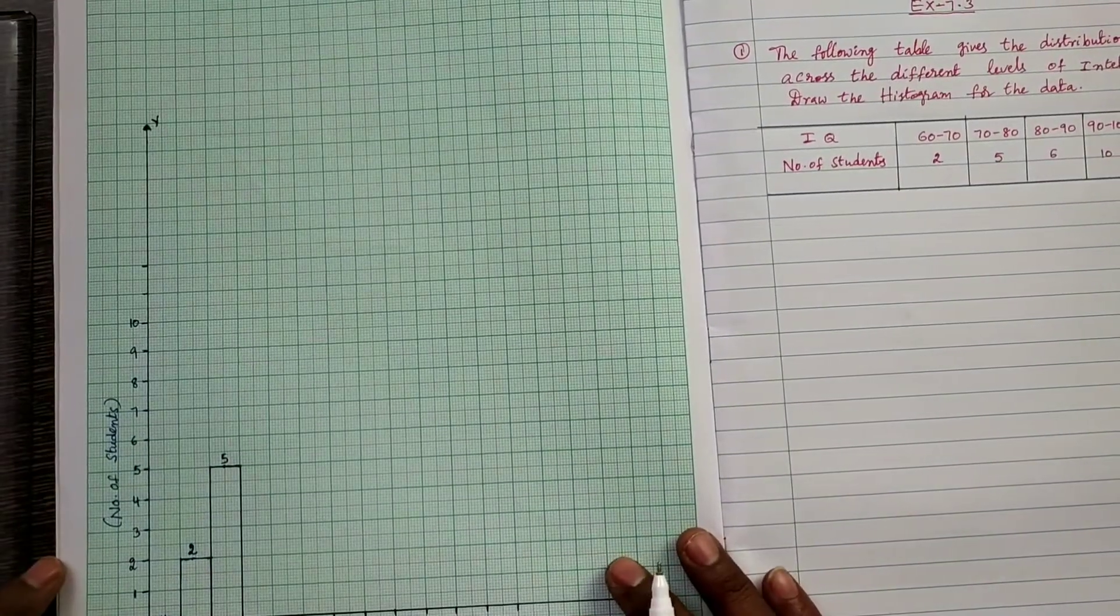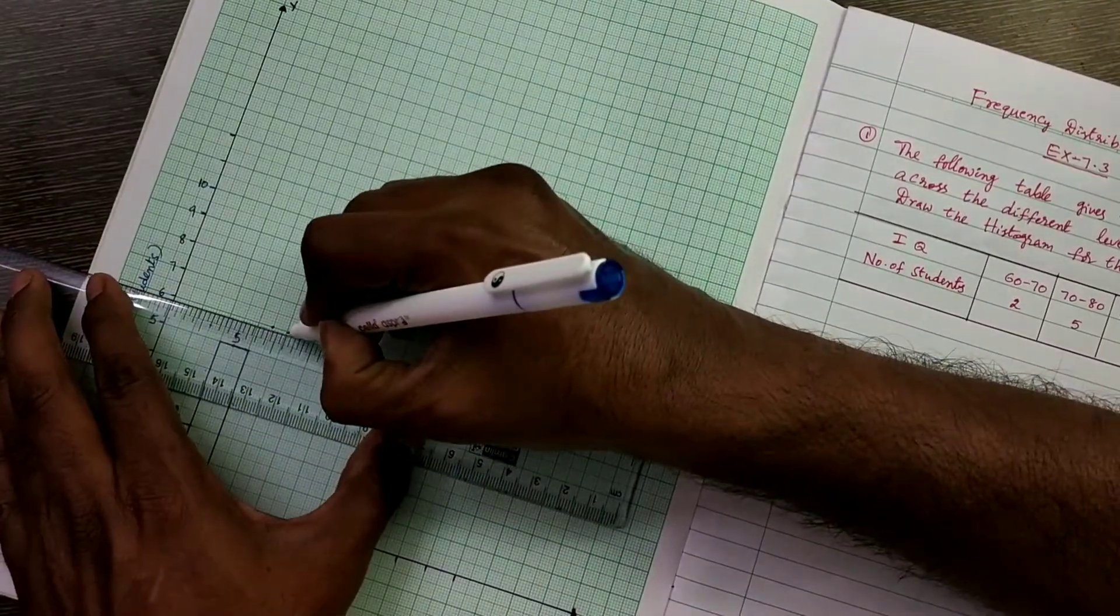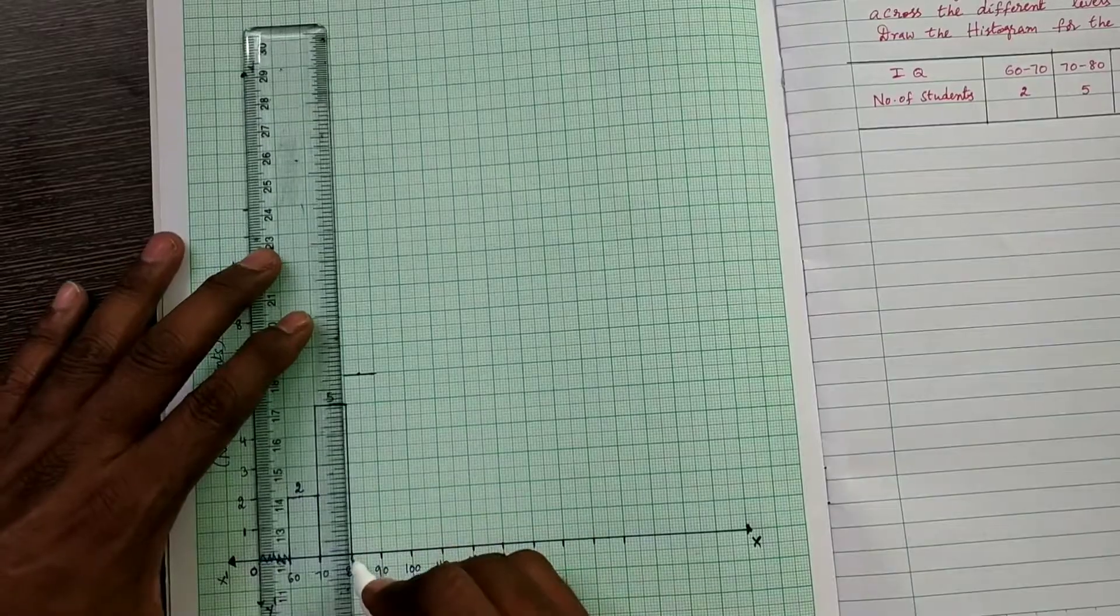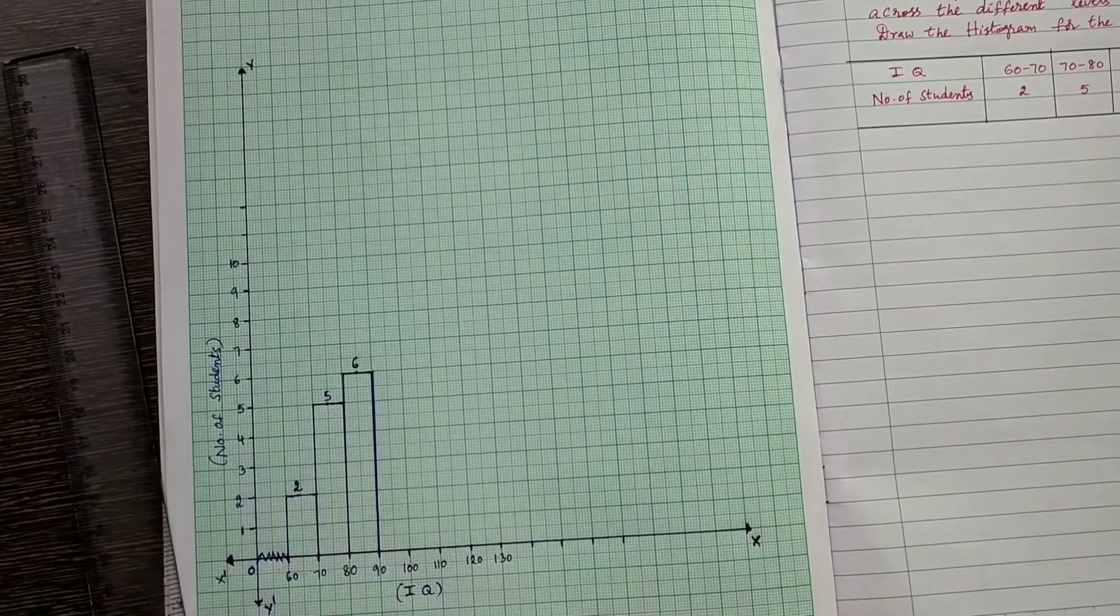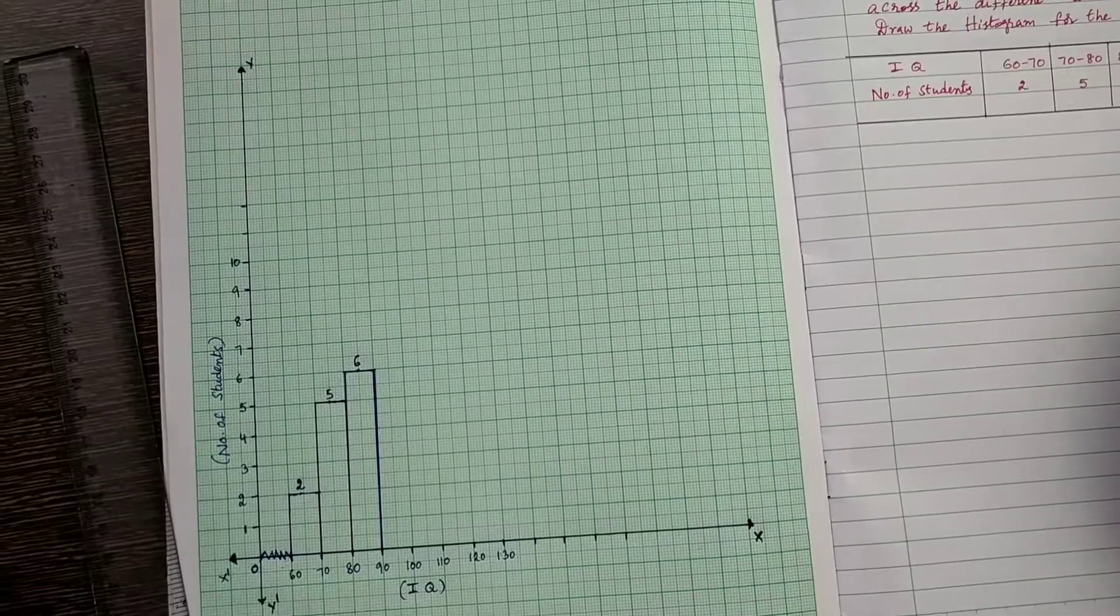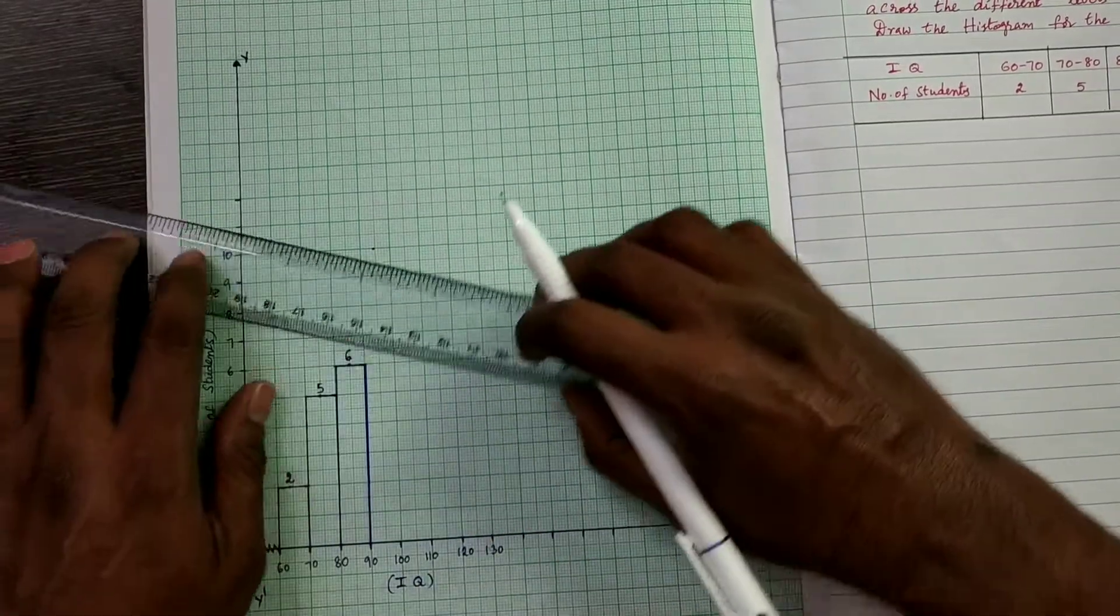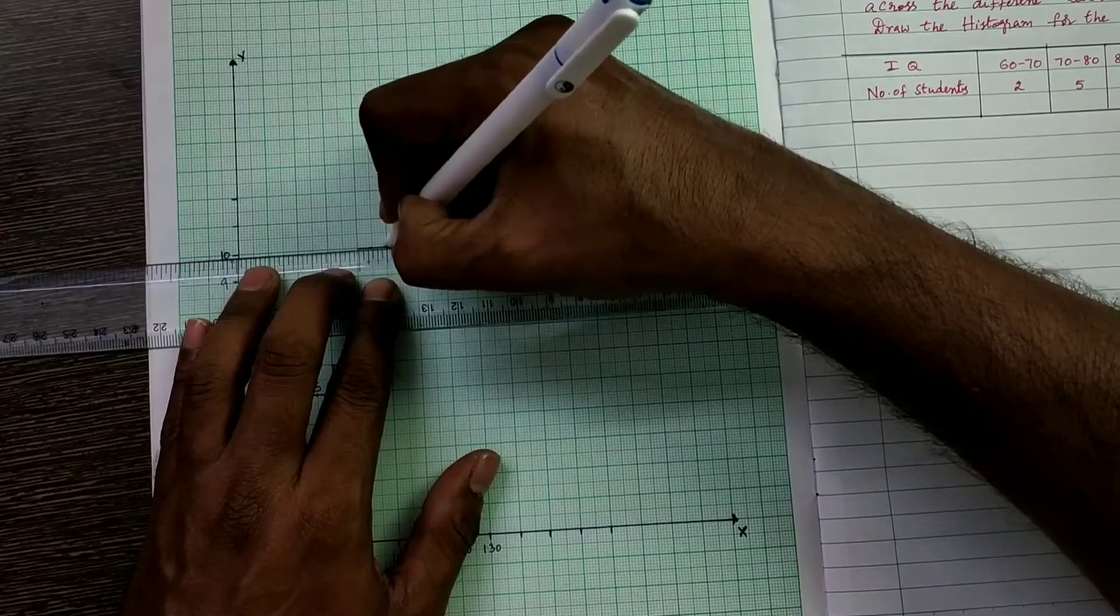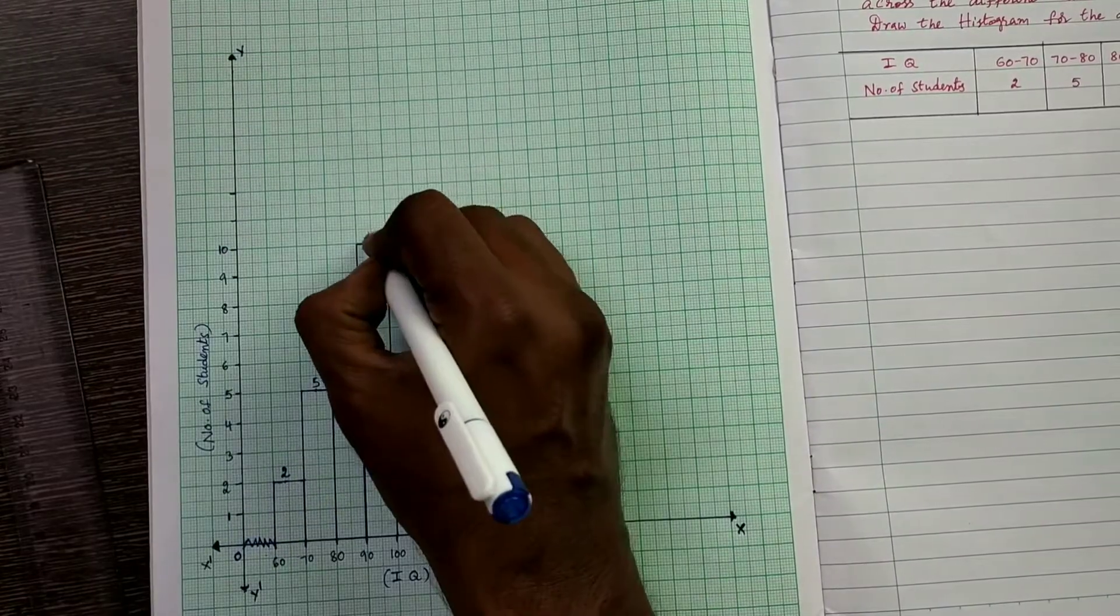Next, 80 to 90 is 6. 80 to 90 is 6. Take a point and draw line segment at 80 to 90. And this border is joined to x-axis. 80 to 90 is 6. Next one, 90 to 100, that is 10. 90 to 100, that is 10. You mark a point and draw line segment at 90 to 100, and join to x-axis, up to x-axis.